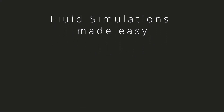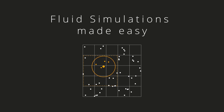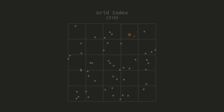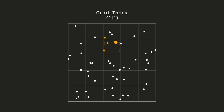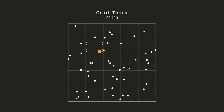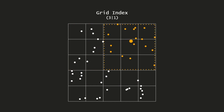Hello and welcome to the next episode of Fluid Simulation Made Easy. In this tutorial we are going to implement how we can retrieve our neighbors from neighboring cells. In the last episode we implemented our neighbor search so we can retrieve all the particles in one cell by the grid index. Unfortunately this is not enough — if a particle goes to the edge of a cell, there are still particles who are actual neighbors but are not detected, so we need to include the neighboring cells in the neighbor search too. By adding the neighboring cells, we now get all the particles we need.